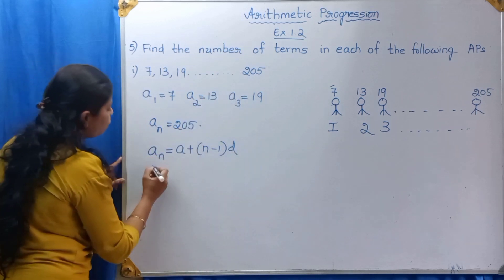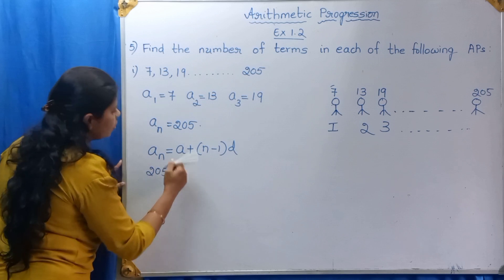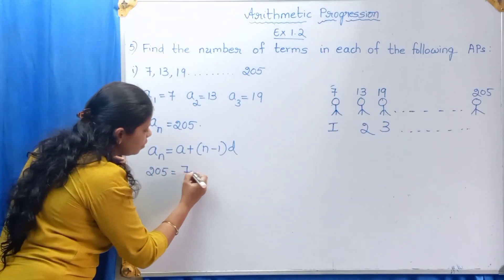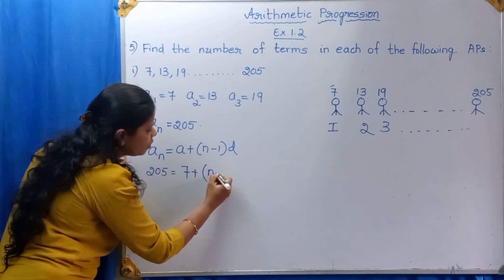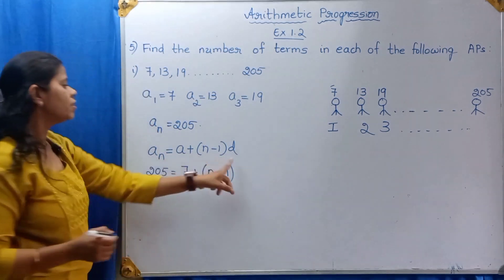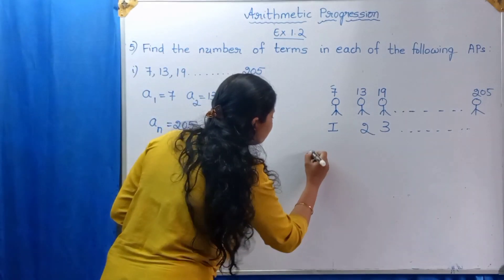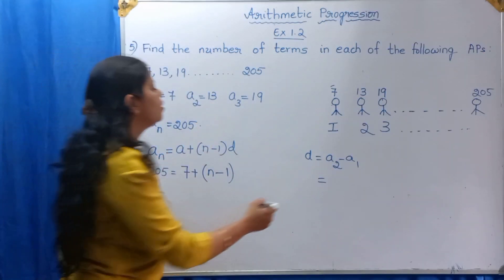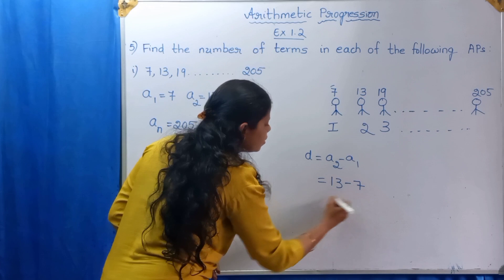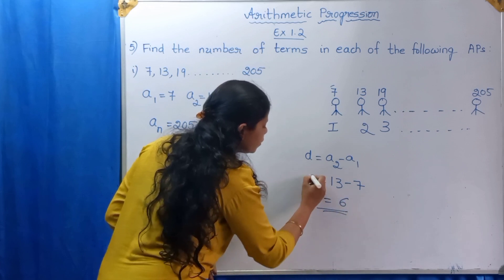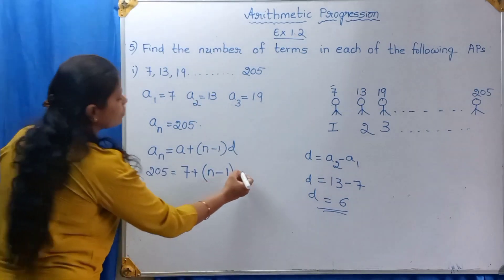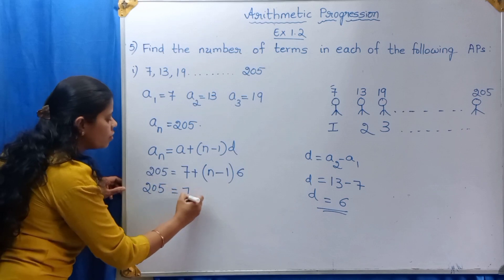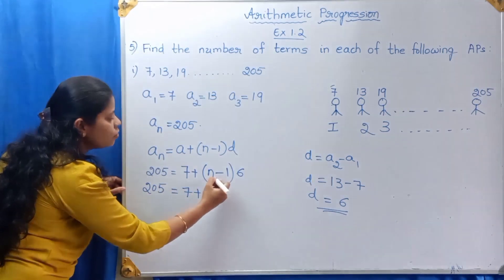AN is 205. A is equal to A1, which is 7. N we have to find out. What is the difference? D is equal to A2 minus A1. A2 is 13. 13 minus 7 is 6. So D is equal to 6. Now, 205 is equal to 7 plus (N minus 1) into 6.